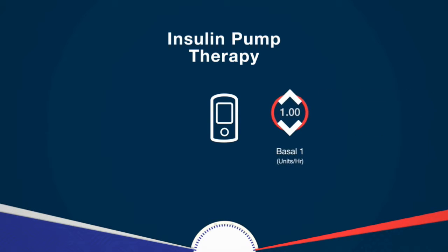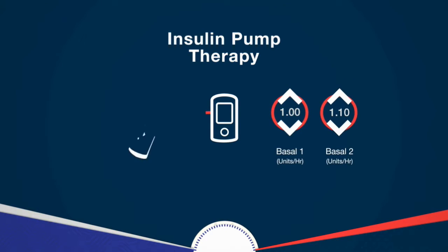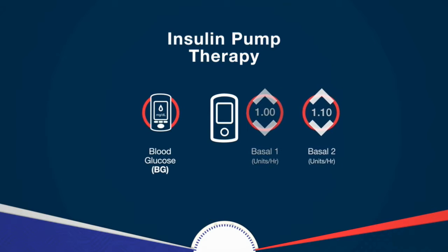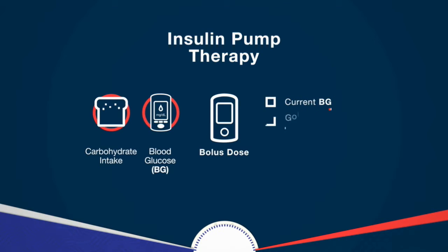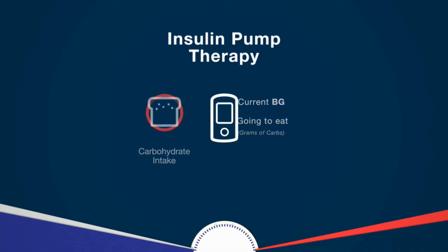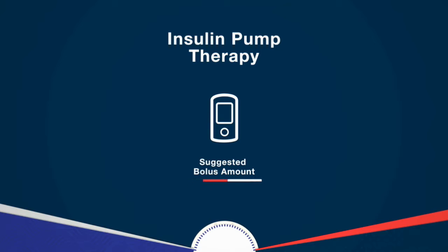Over time, they can adjust your basal settings or include multiple programs. When you need additional insulin to correct your blood glucose, BG, or to match your carb intake, you can deliver that insulin by programming a bolus dose. When you program a bolus dose, you will be asked to provide two pieces of information: your current BG, and if you are going to eat, the grams of carbs. Your pump will then use these values along with your personalized bolus settings to provide a suggested bolus amount.